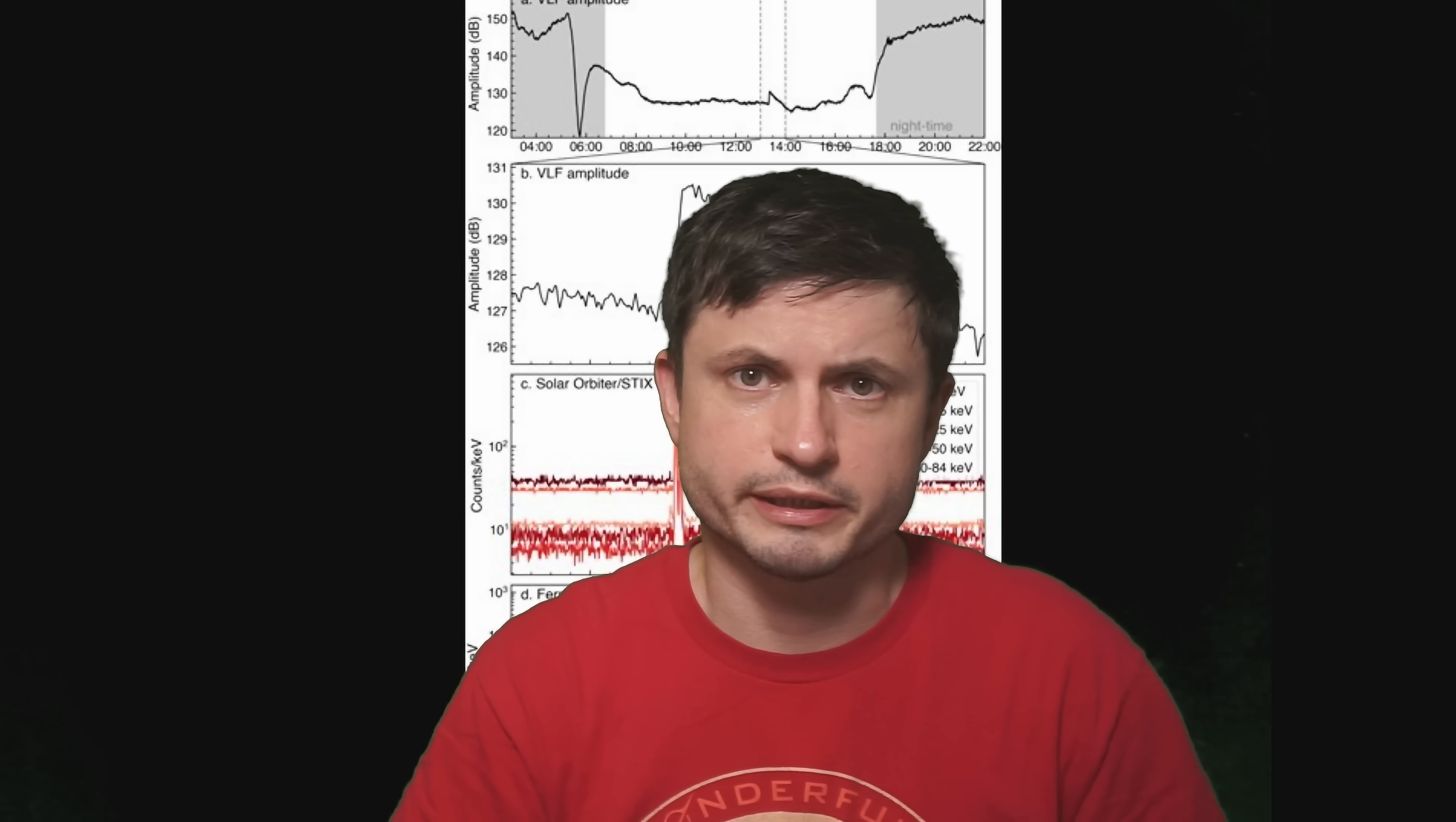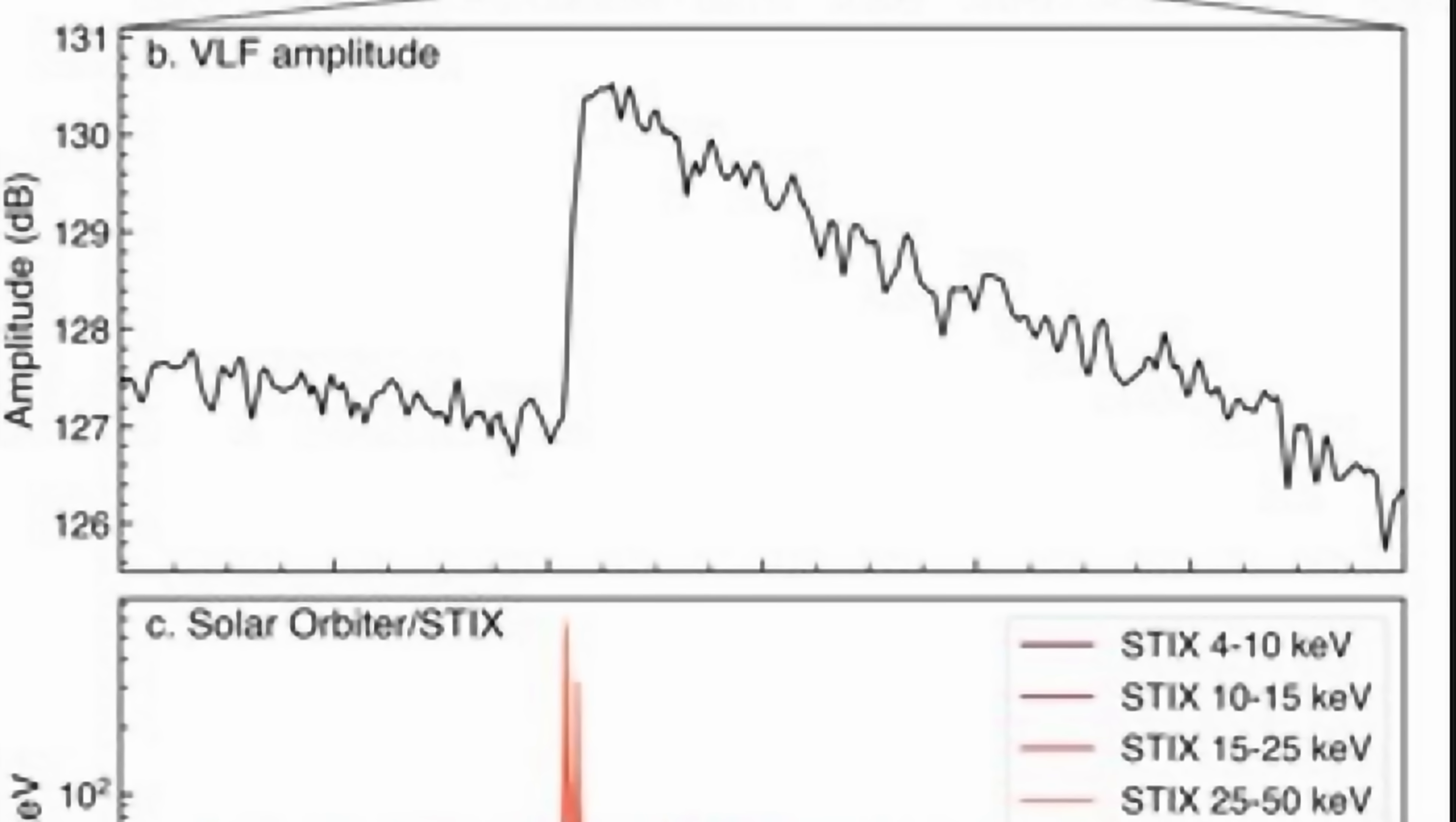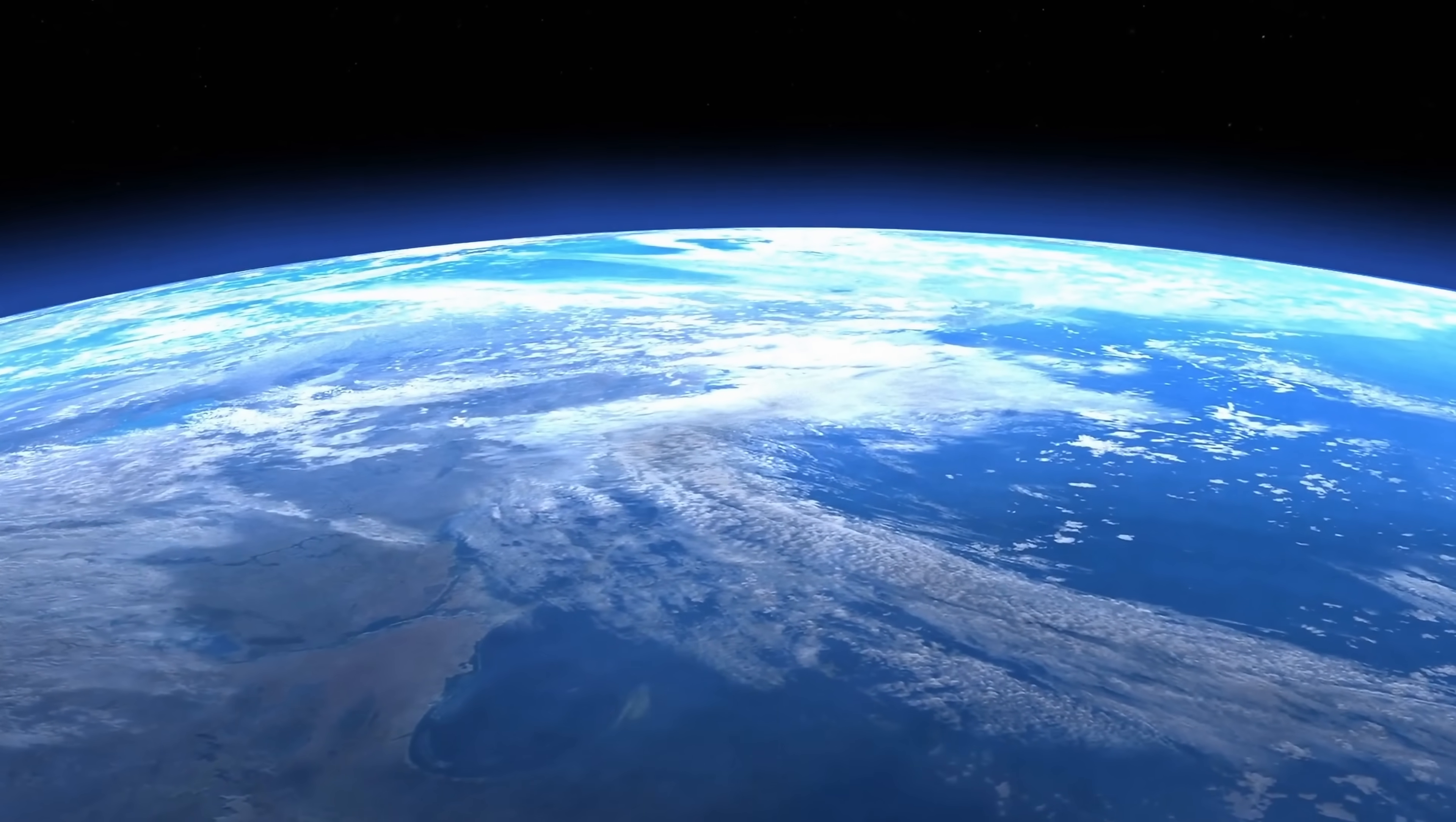But more intriguingly, or I guess a little bit more worrisome, is that this explosion even affected the atmosphere of our planet. It dramatically changed the ionosphere for several minutes, which then made the atmosphere of the planet expand for at least a few hours. And that's after an explosion that happened approximately 2.4 billion light years away from us.